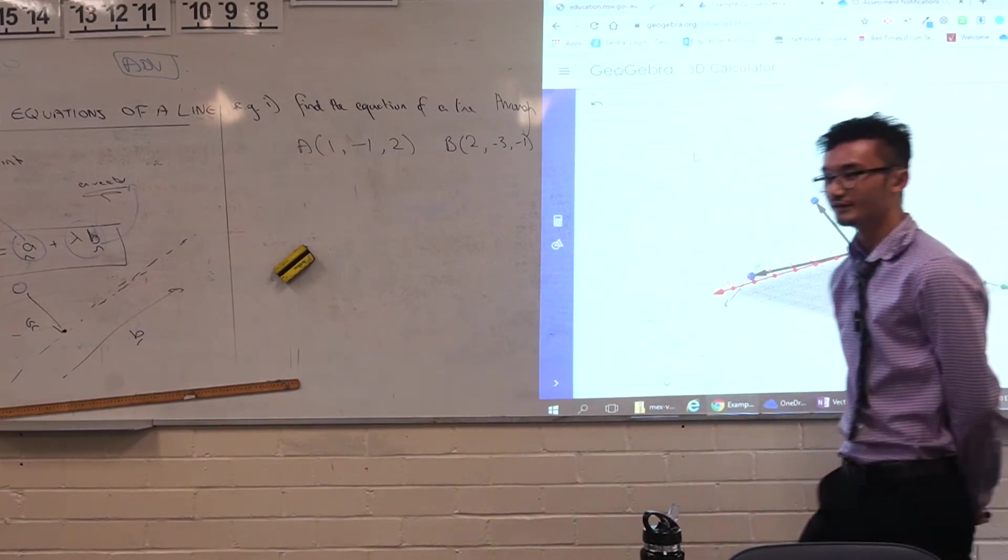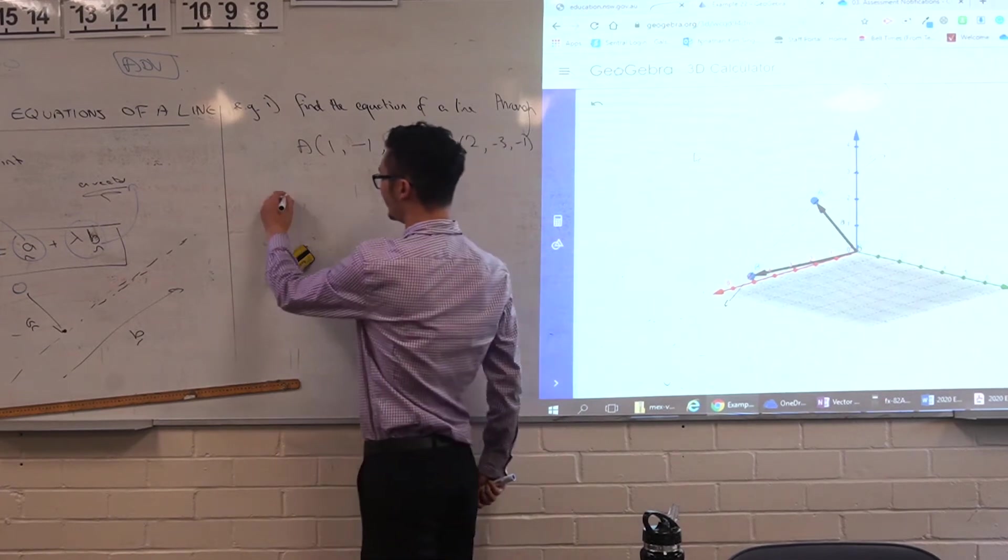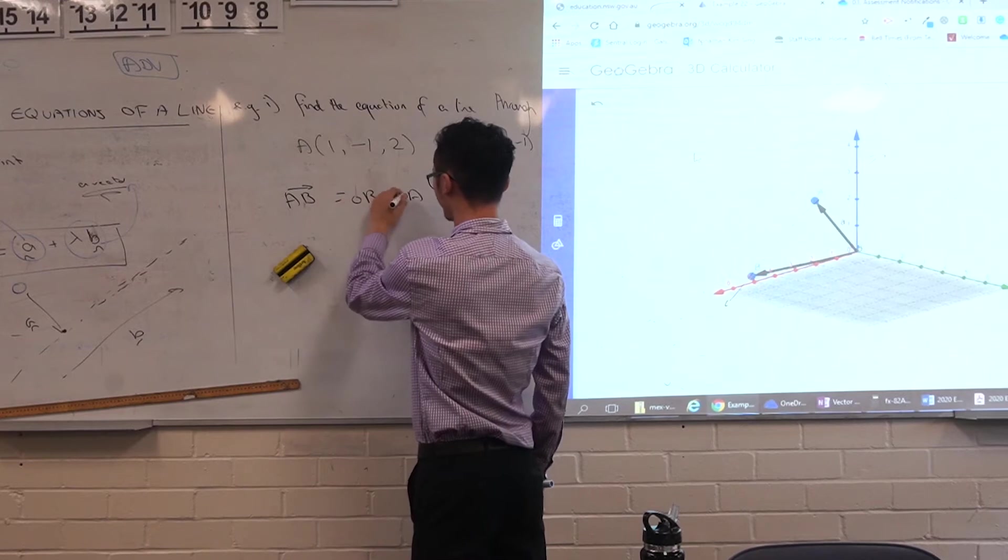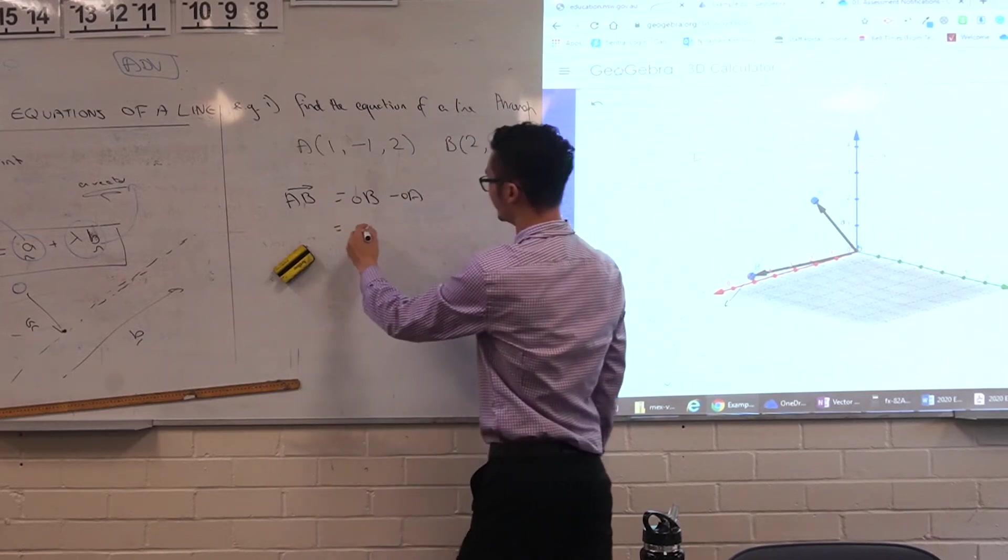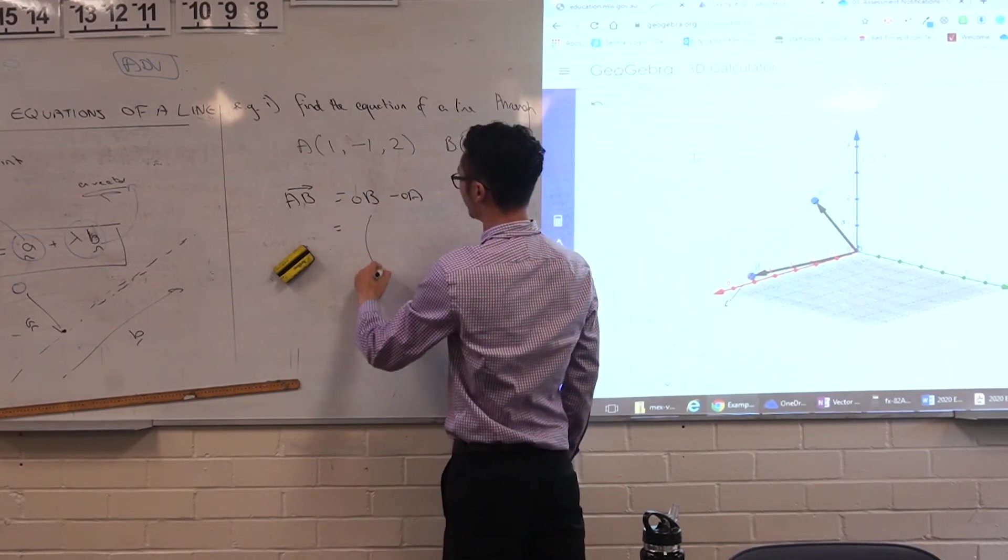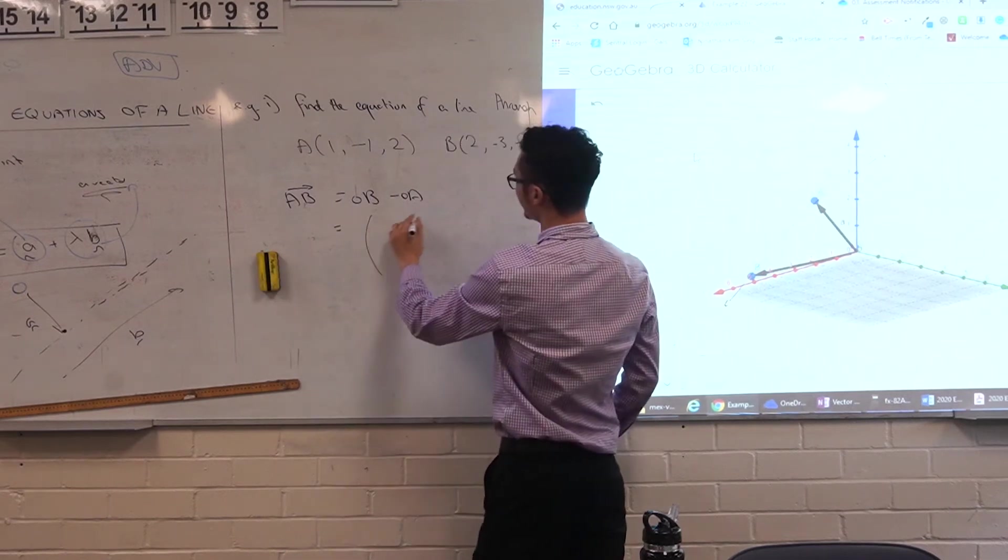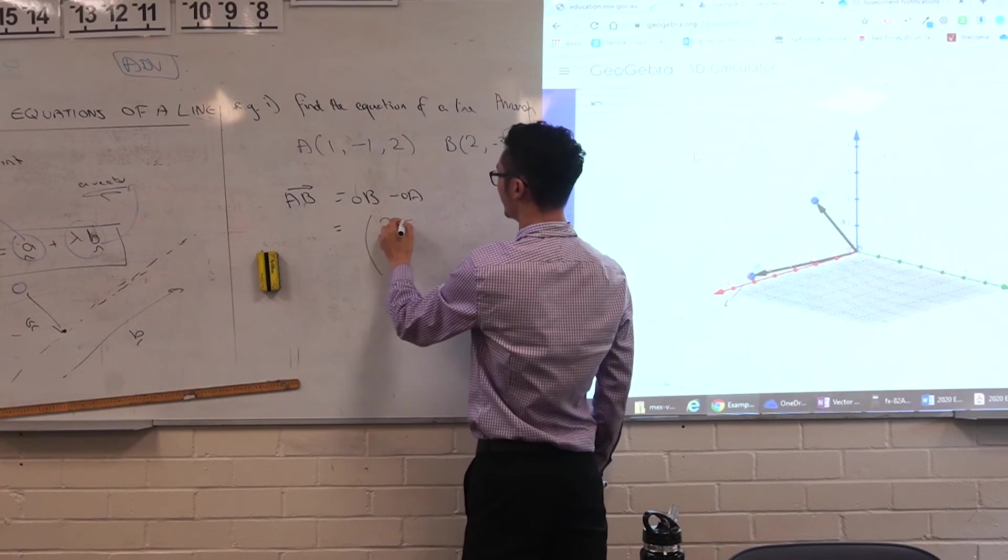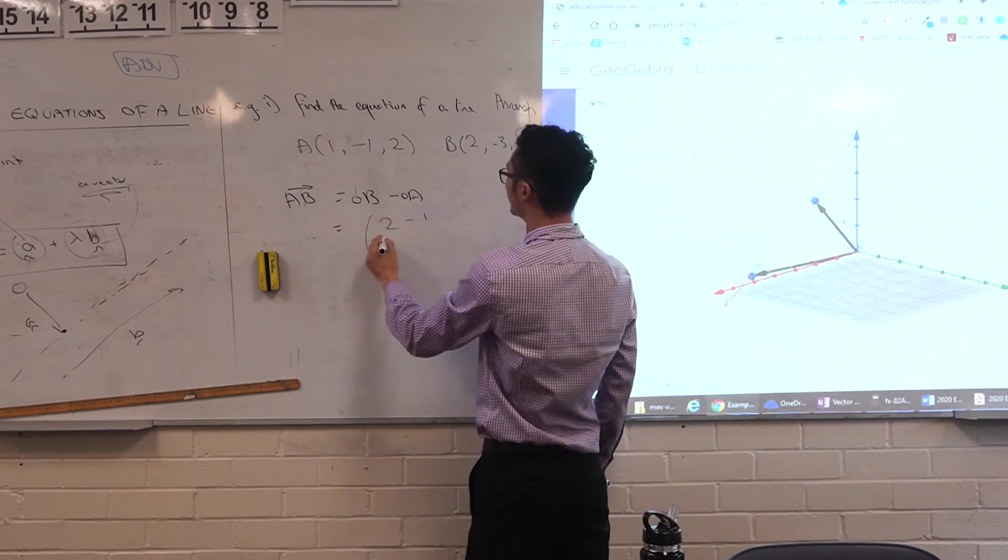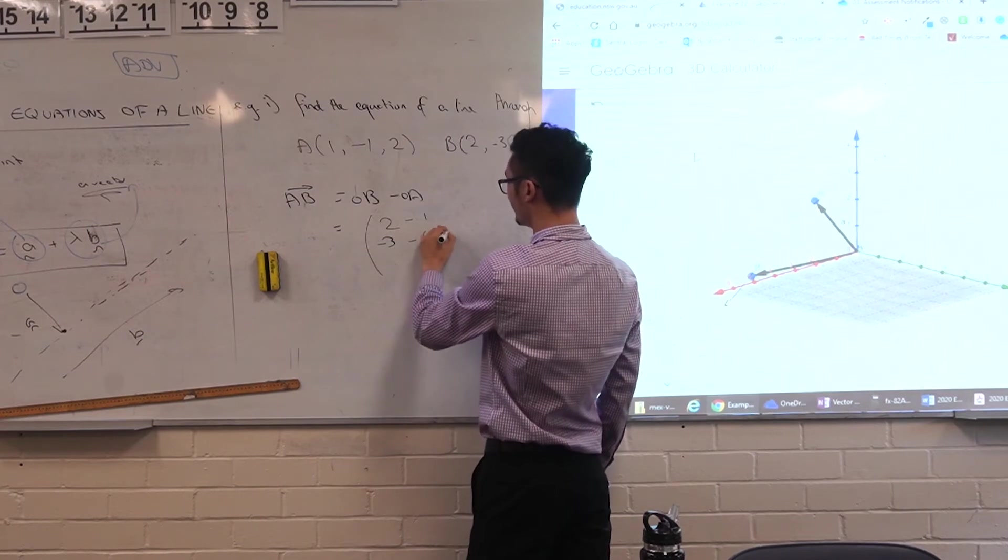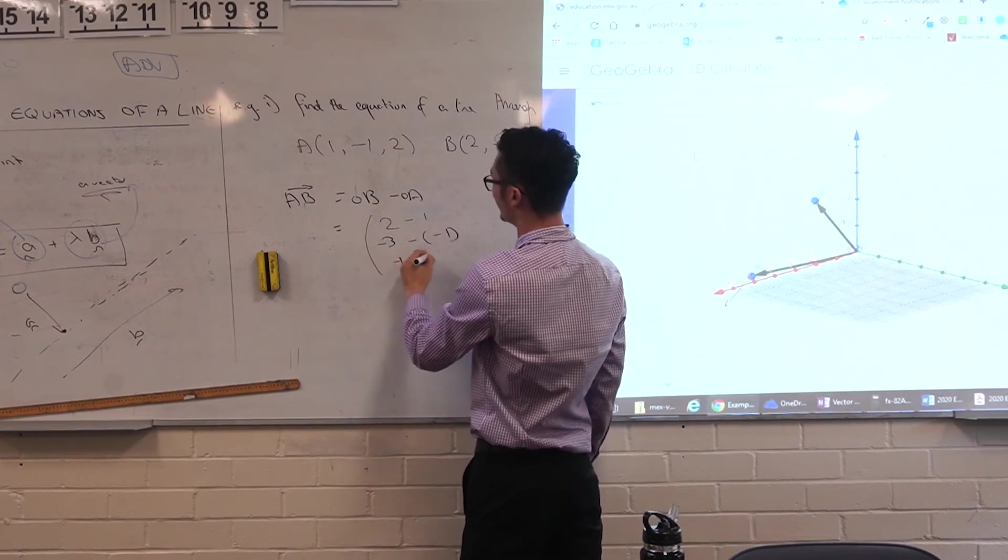So what would we need to do to find the direction? B to A, A to B. Yep, so we're going to do A to B, B to A. Let's find A to B. So that would be B minus A. Or OB minus OA. And so that would be... Let's do it in column notation. So we've got 2 minus 1, negative 3, minus negative 1, and then negative 1 minus 2.